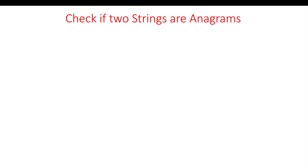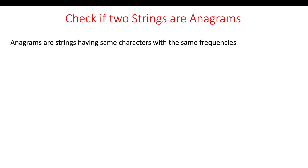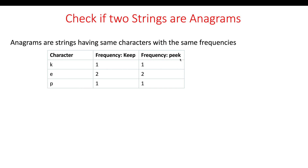Hello, myself Amrita, welcome back to our channel TechnoSage. Today we are going to discuss another important programming question: check if two strings are anagrams. Anagrams are strings having the same characters with the same frequencies. For example, 'keep' and 'speak' have the characters K, E, and P in both strings, with K and P occurring once and E occurring twice in both. So these two strings are anagrams.